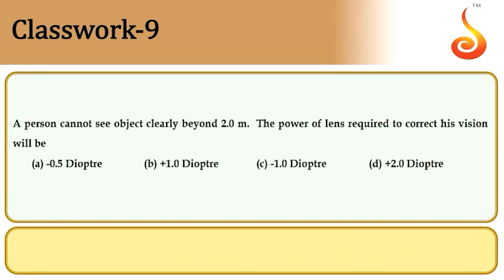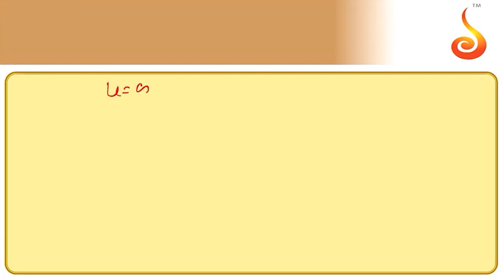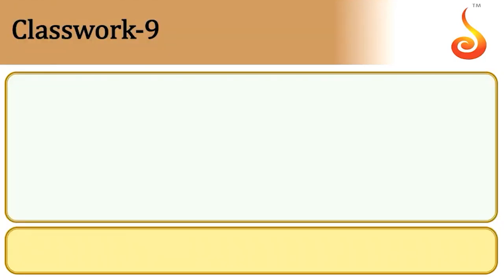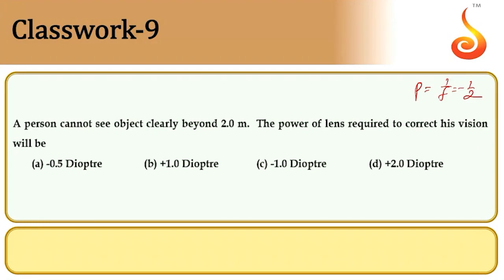Example 9: A person cannot see objects clearly beyond 2 meters. For u = infinity and v = -2 m, using 1/f = 1/v - 1/u gives f = -2 m, so power = -1/2 = -0.5 diopters.